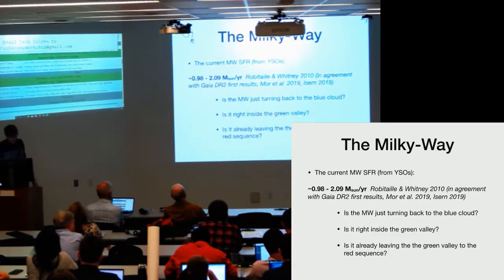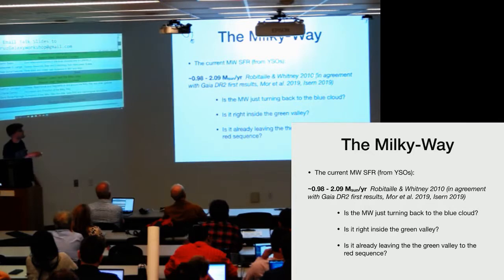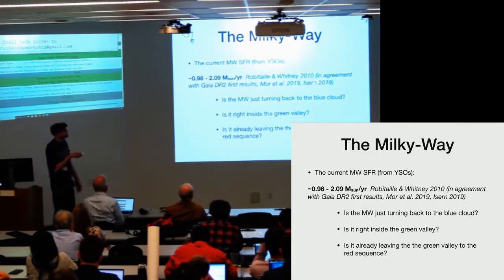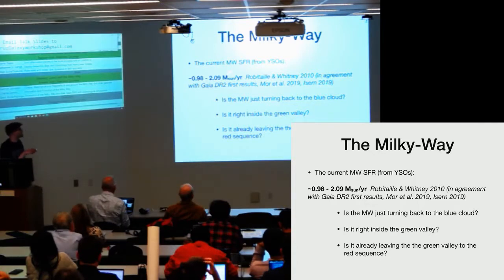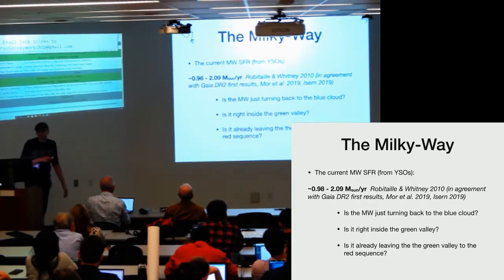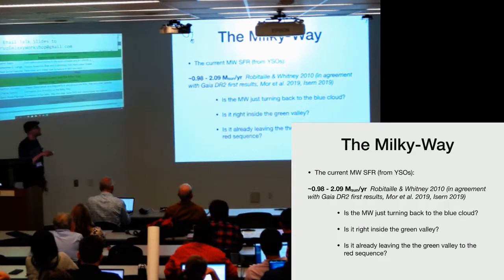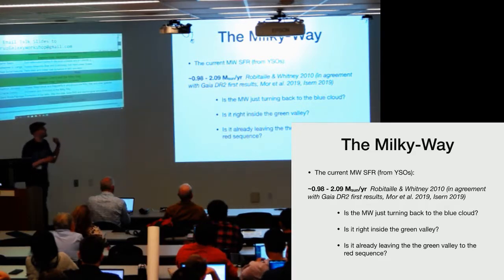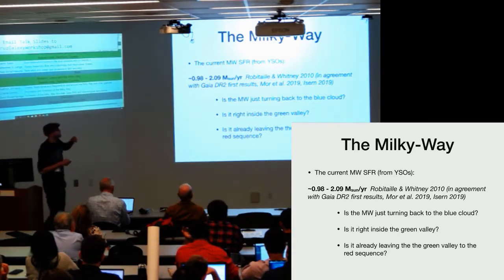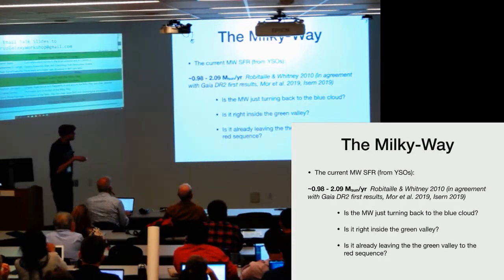Another global property is the current star formation rate. Values obtained in 2010 are being recovered with our work and new recent publications, in the range of one to two solar masses per year. This means that the galaxy is quite quenched, not completely, and what we don't know is if the Milky Way is just going back to the blue cloud after a previous quench. Maybe we are just in the middle of the Green Valley or maybe we are already leaving the Green Valley to the red sequence.